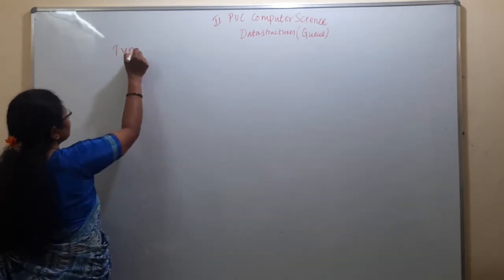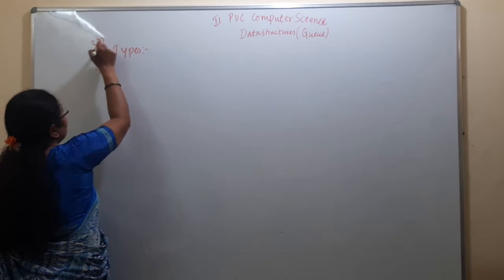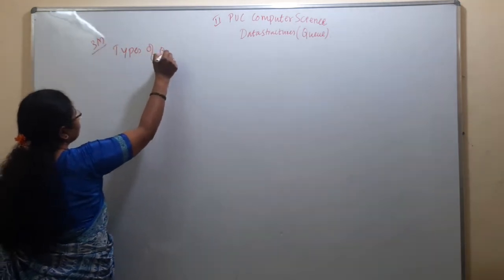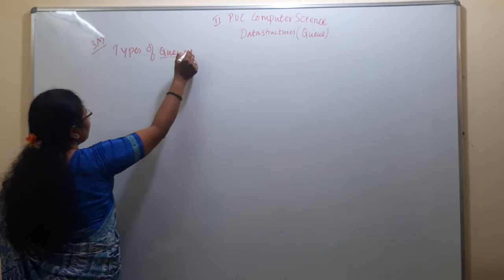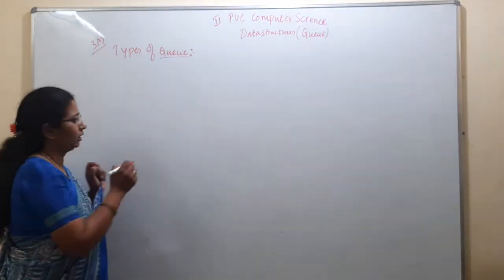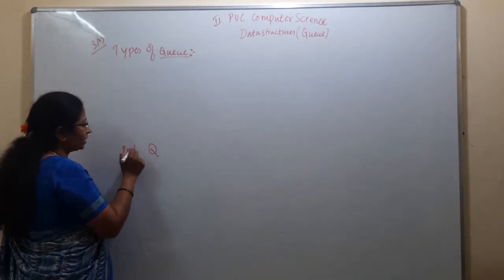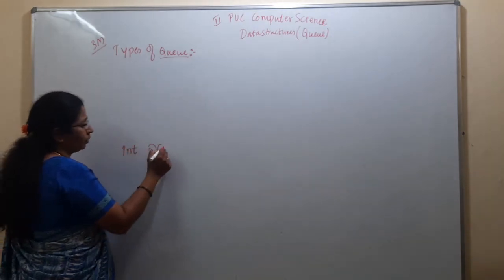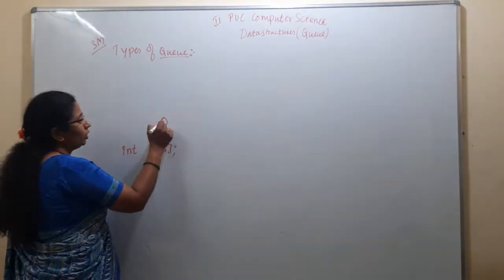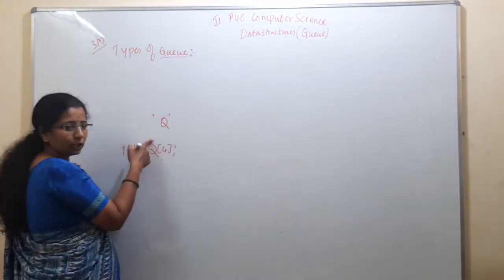Today's class we discuss one of the important exam questions: types of queue. Always write the complete word 'queue' — Q, U, E, U, E. Don't write only 'Q' as a short form. When writing the queue name in code declarations you can abbreviate, but in answers write the complete word.